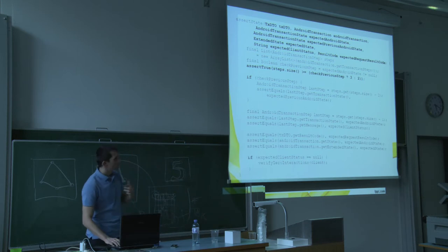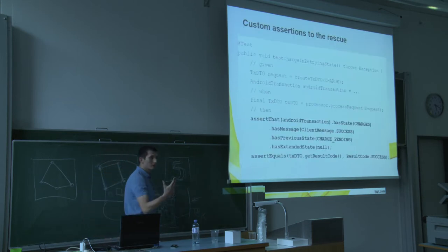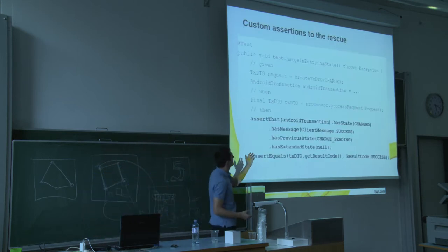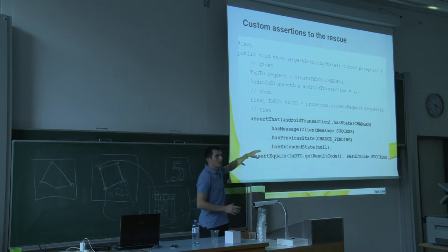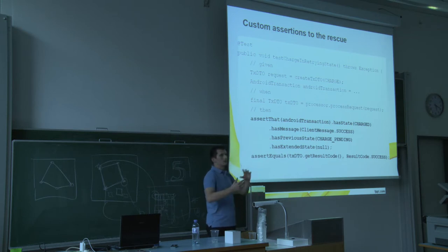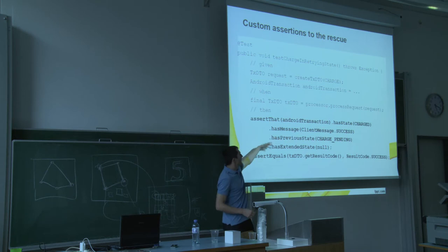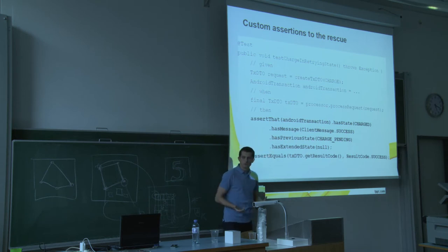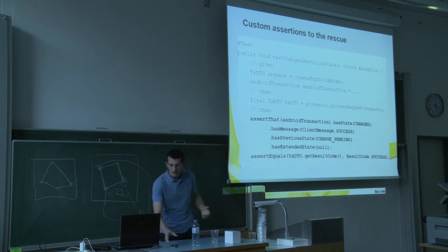I'm not saying creating a private method is bad — I say they have their limits. Because in my opinion, the real solution is with custom assertions here. Even if you know nothing about the domain, you can just read it and understand: we expect this and this and this. This is our DSL that we can change to our liking.